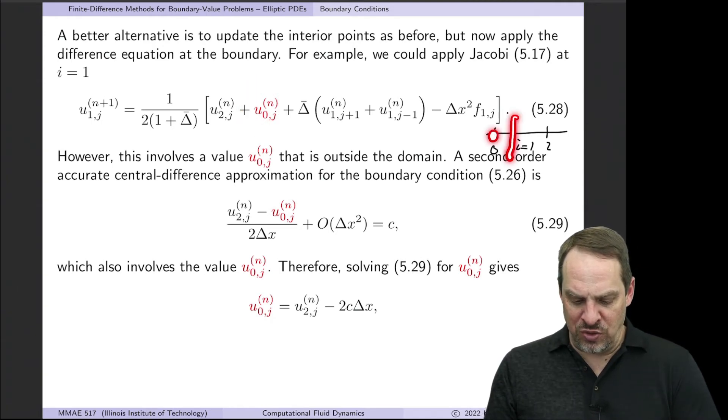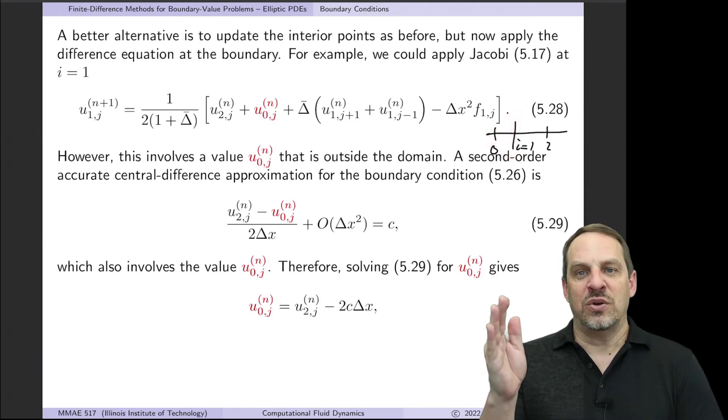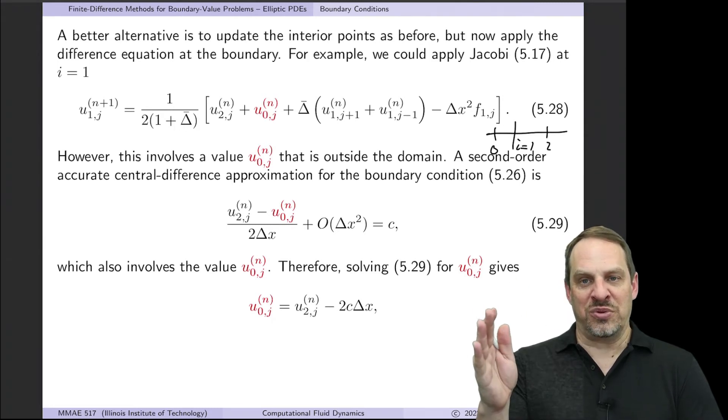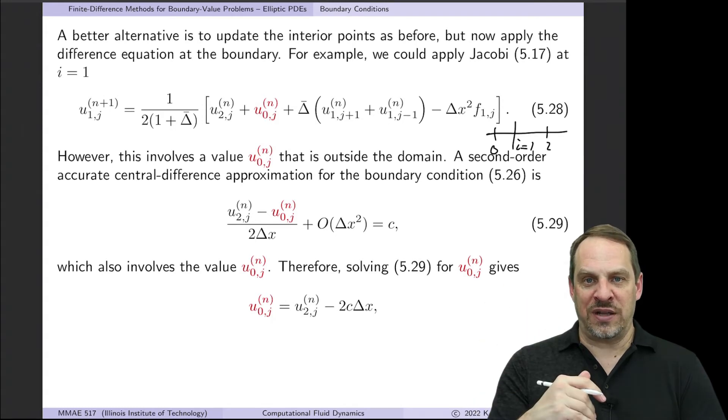But you'll notice we have this point. Here's the boundary U0J. That's a point outside the domain, which remember we had that same situation when we developed the Thomas algorithm for the tridiagonal problem associated with the extended fin example. And here we're going to treat it exactly the same way.